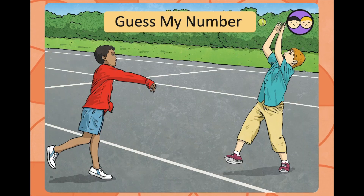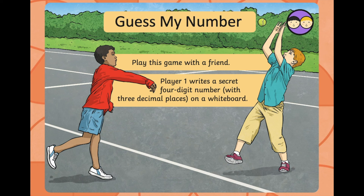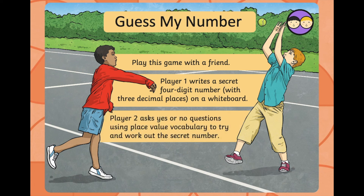This is a game called Guess My Number. You need to play this with a friend or a family member. Player one writes a secret four-digit number with three decimal places on a whiteboard or notebook. Player two asks yes or no questions using place value vocabulary to try and work out the secret number — similar to what you're doing in today's work, using the language to work out what the number is. This is the end of today's presentation, so you can play that game with your family or friends.